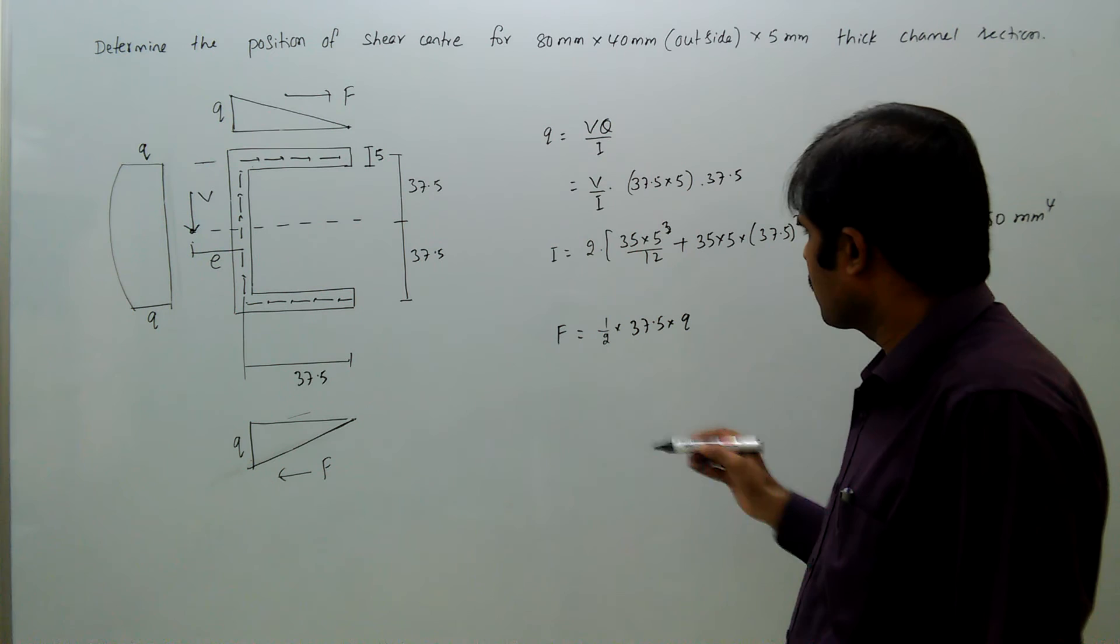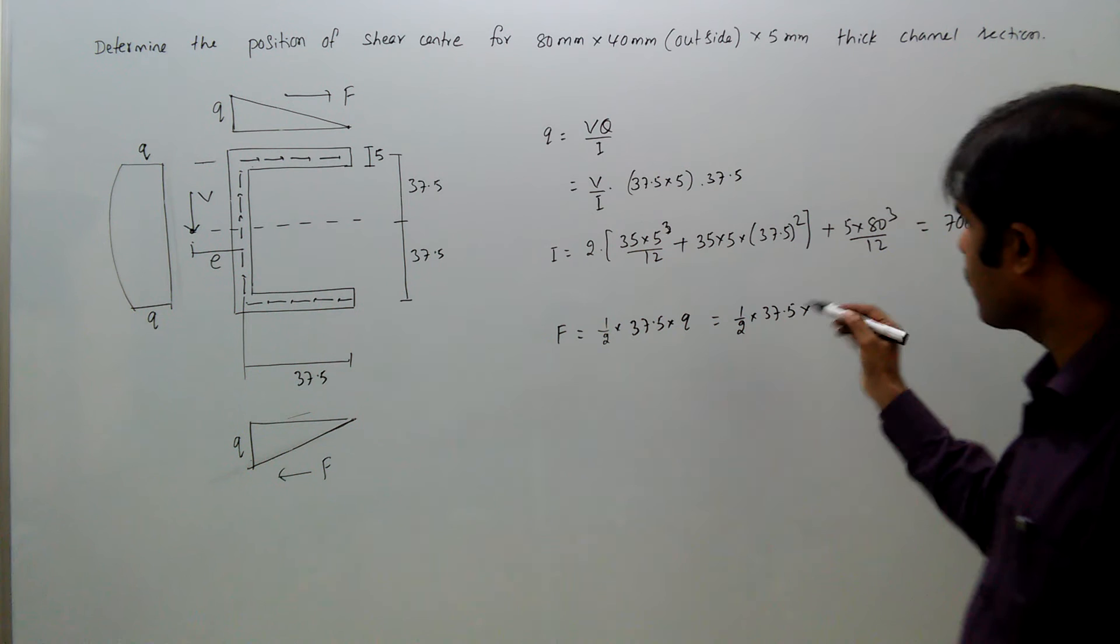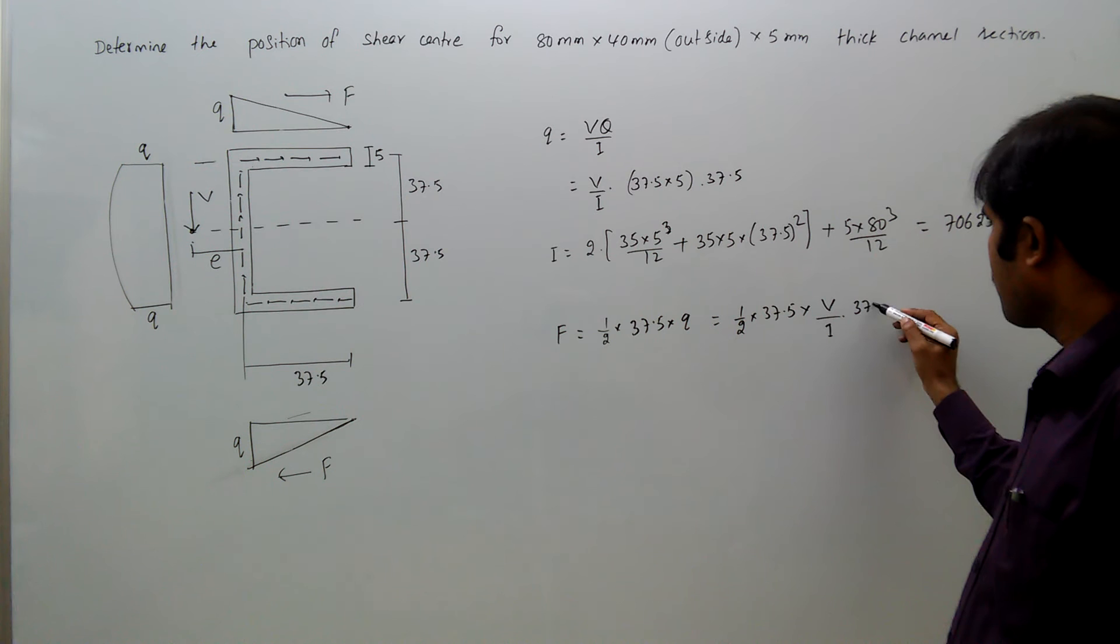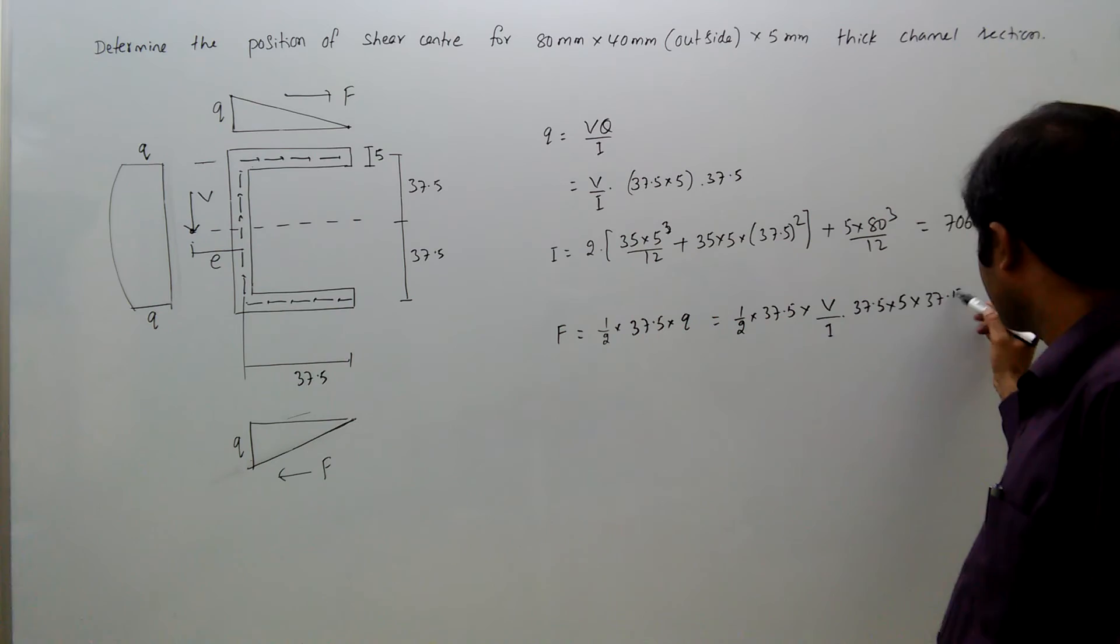That equals half into 37.5 into q, where q is V/I times 37.5 times 5 times 37.5. That is F.